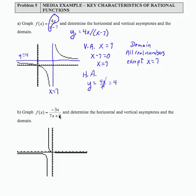Looking at part b, again when you graph this on your calculator, negative 3x divided by parentheses 7x plus 9, so be careful there.